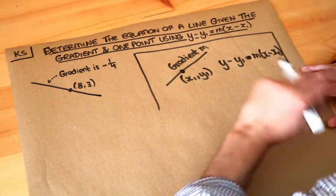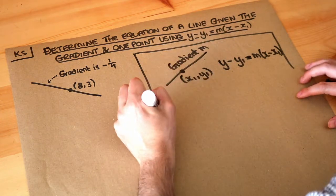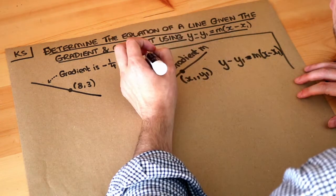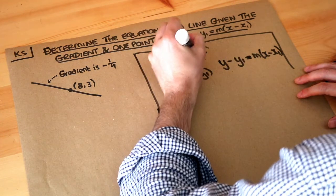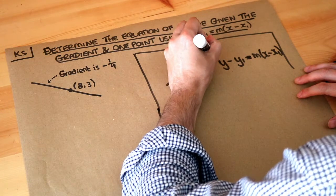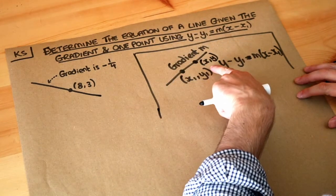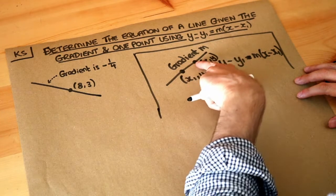Well, one way of proving it, although it's not important for you to know, is that if you had for example another general point on the line x, y, then how would we find the gradient of this line given those two points?